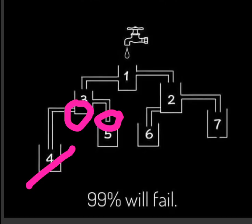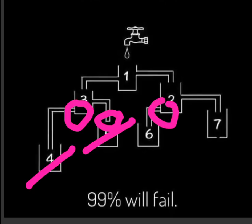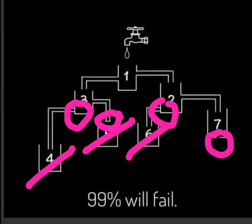Now let's consider the other side, taking it from cap 2. Cap 2 has a link to cap 6 and cap 7. Cap 6 — the entry point is also blocked, which makes cap 6 out of the contest.